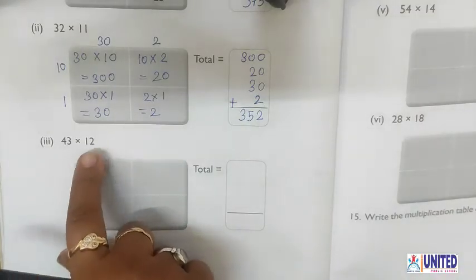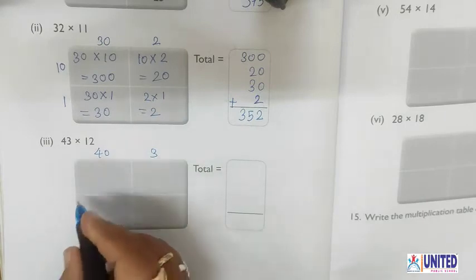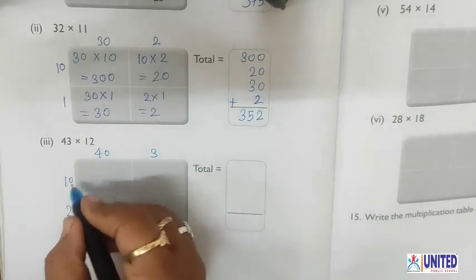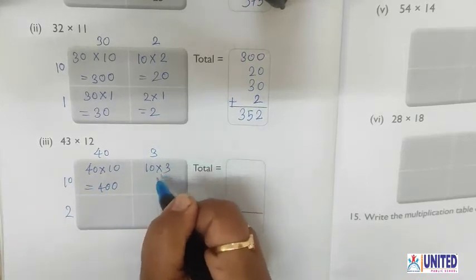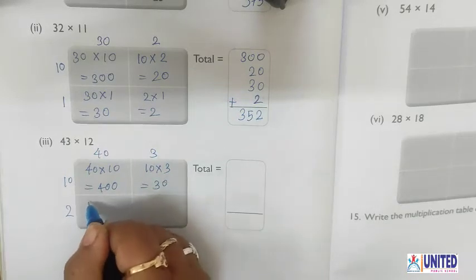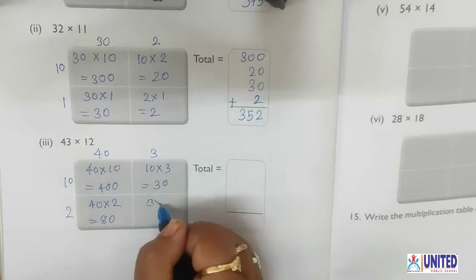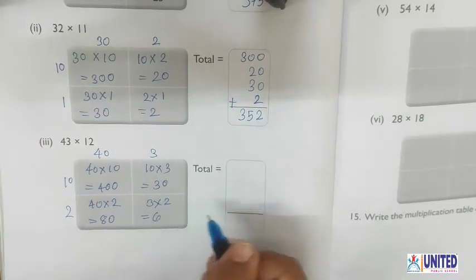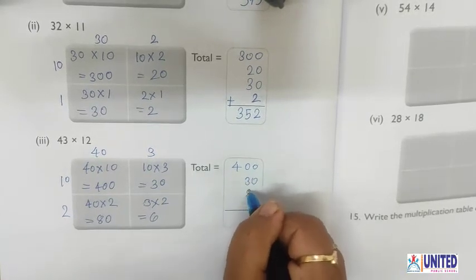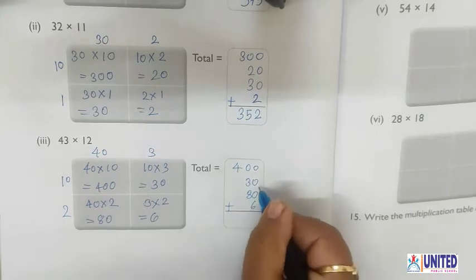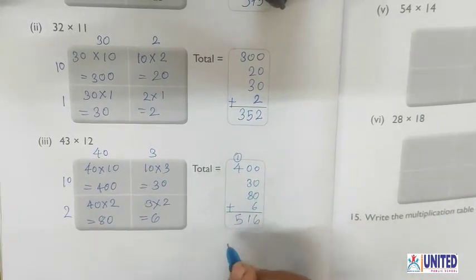For 43×12, expand 43 as 40 and 3, and 12 as 10 and 2. Then 40×10=400, 10×3=30, 40×2=80, and 3×2=6. Add: 400+30+80+6. 6 as is, 8+3=11 carry 1, 4+1=5. The answer is 516.